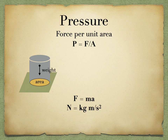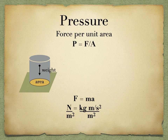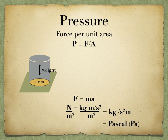Since pressure is force over area, we take a Newton and divide by area in meters squared. That gives us Newtons per meter squared, or kilograms·meters per second squared over meters squared. After canceling, you end up with kilograms over meters·seconds squared, which in the SI system is called a Pascal — the SI unit of pressure. You'll need these equations in physics; for now this just shows how we arrive at the Pascal.